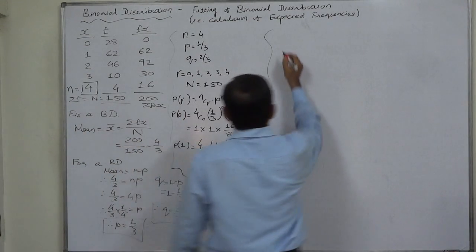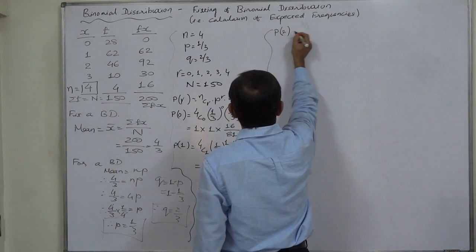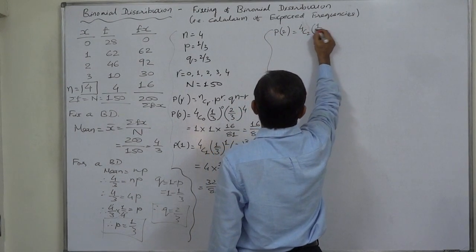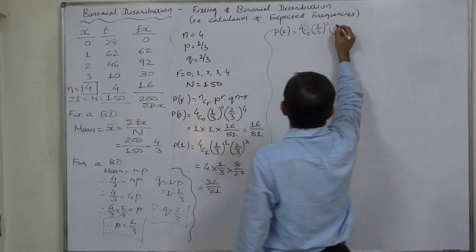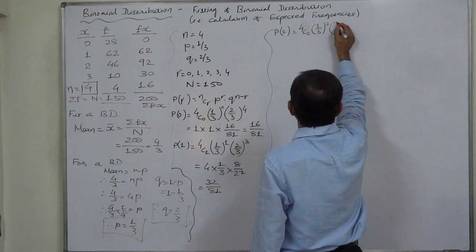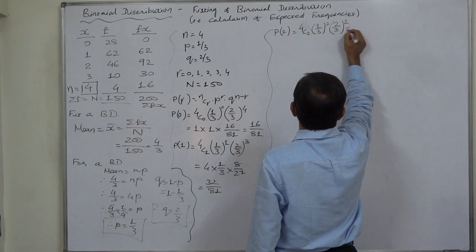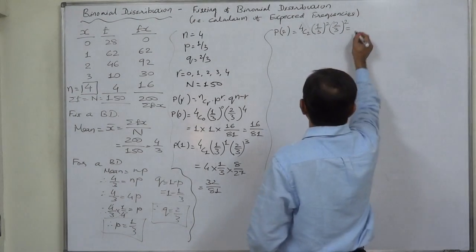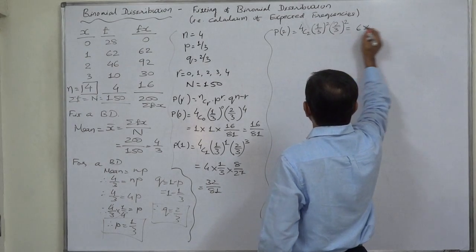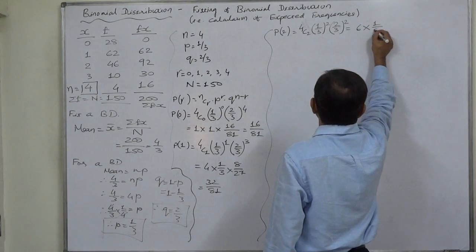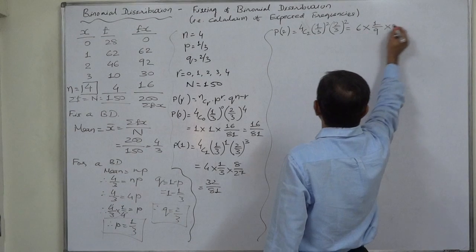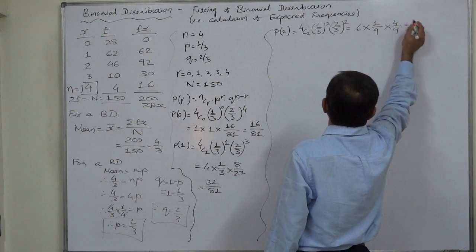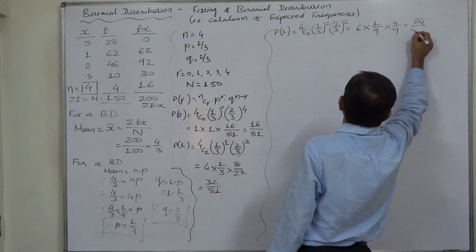Similarly, P of 2 will be 4C2 into 1 by 3 raised to 2 (that is p raised to 2) into 2 by 3 (that is q raised to 4 minus 2, 2). 4C2 means 4 into 3 divided by 2 is 6, into 1 by 3 raised to 2 is 1 by 9, into 2 by 3 raised to 2 is 4 by 9. 6 into 1 into 4 is 24 upon 81.